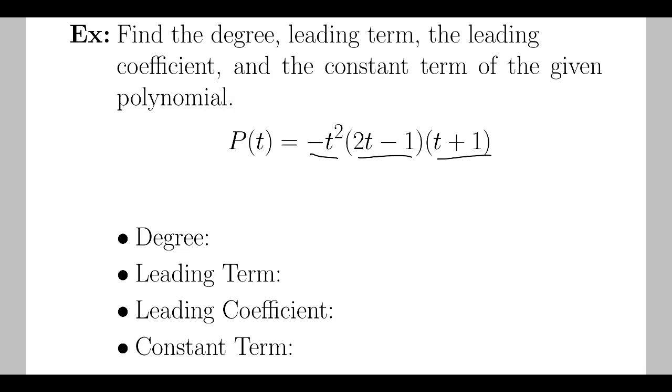So now I need to identify the leading term in each thing being multiplied. That's going to be negative t squared, 2t, and t.